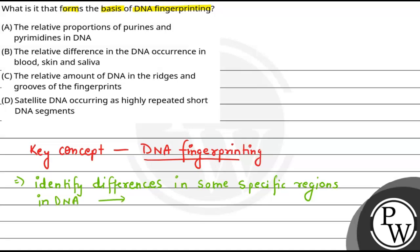They are known as repetitive DNA. These repetitive DNAs are small stretches of DNA which are repeated, and this is why we call them repetitive DNA.